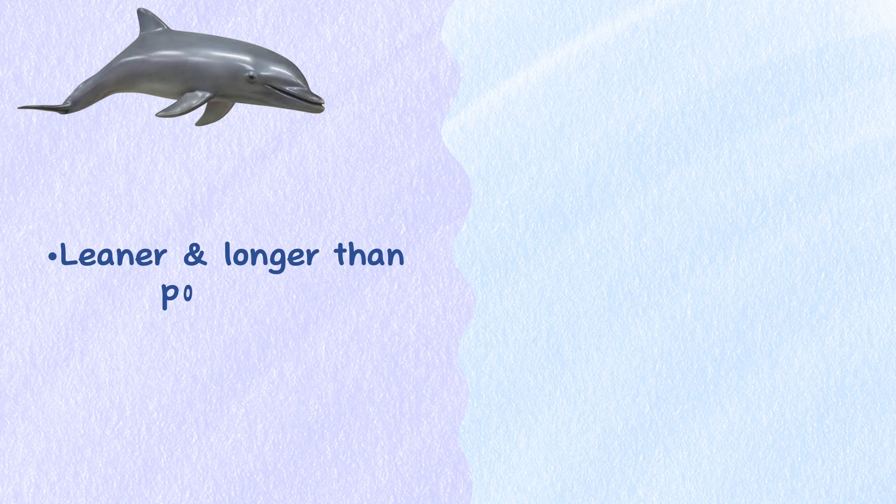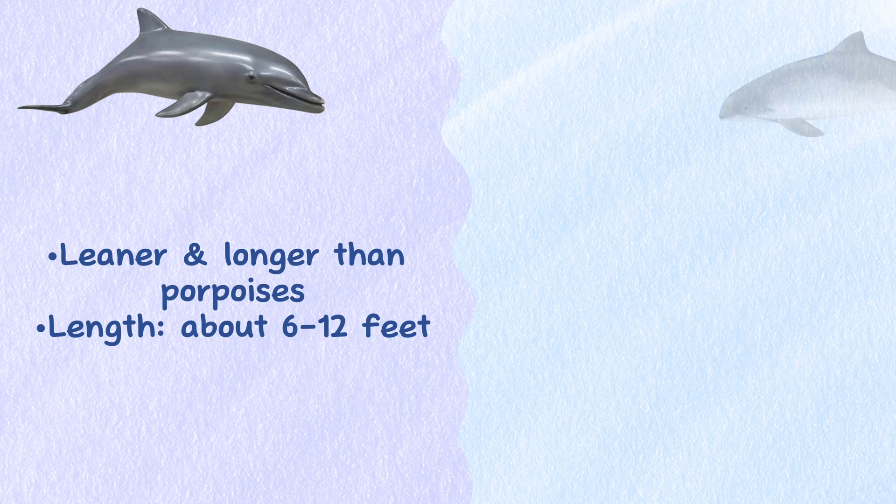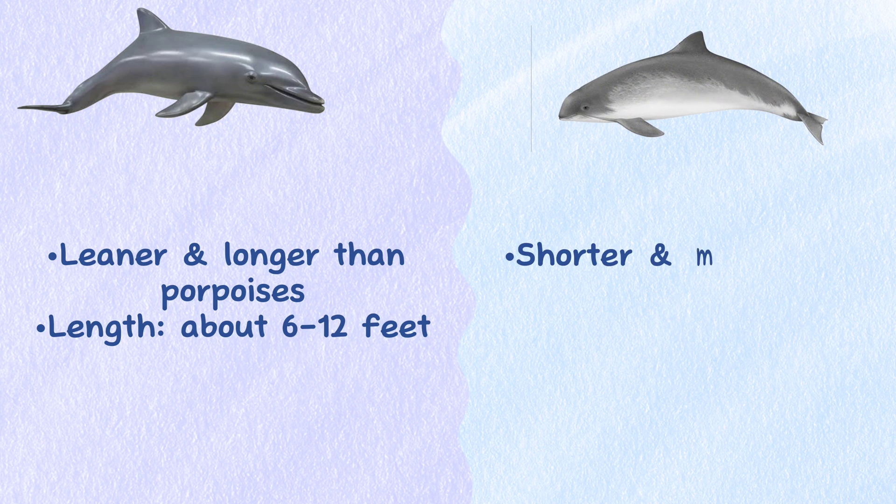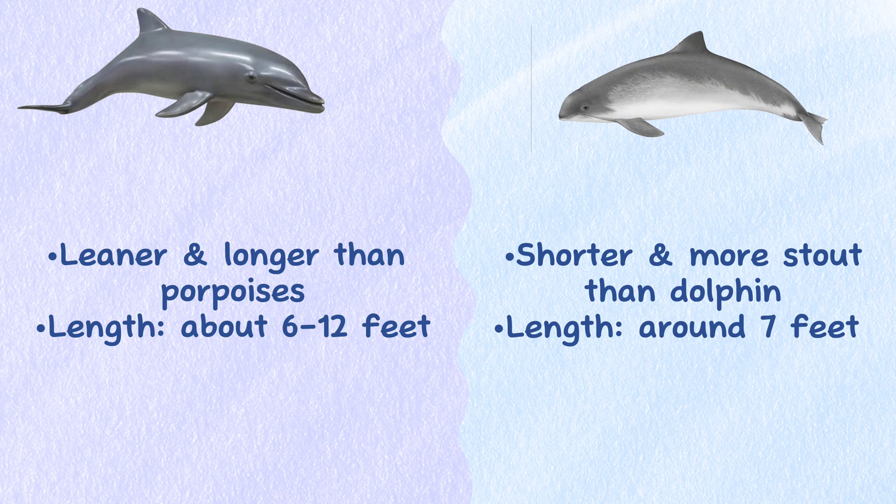Size. Dolphins are leaner and longer than porpoises, averaging about 6 to 12 feet in length. Porpoises tend to be shorter and more stout than dolphins, reaching maximum lengths of around 7 feet when fully grown.